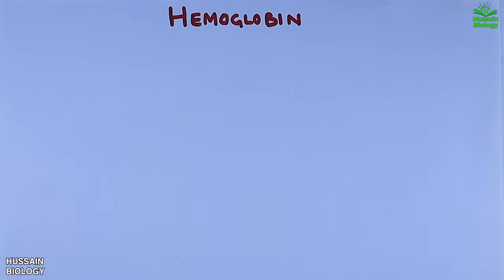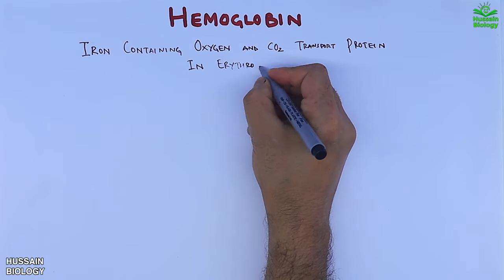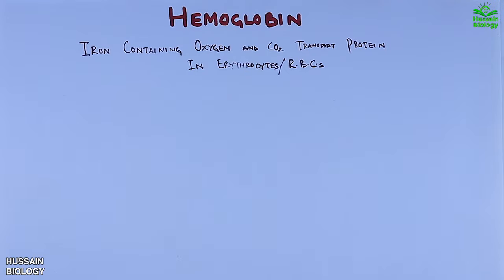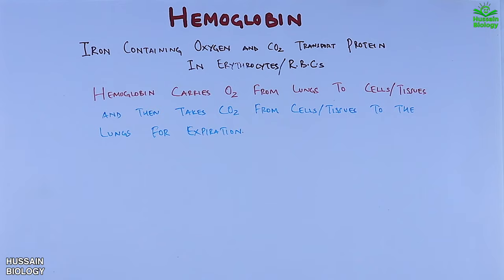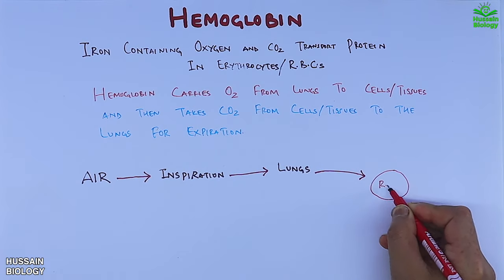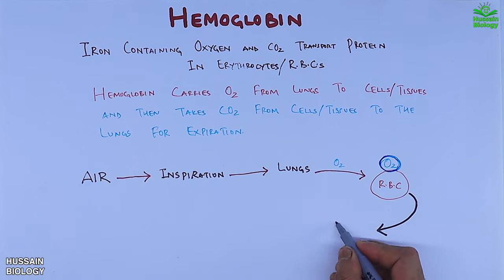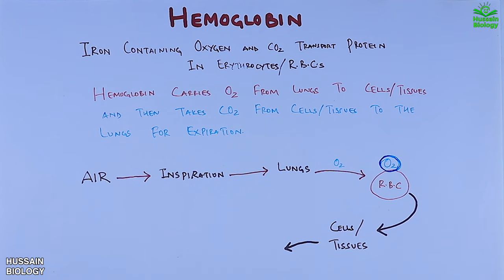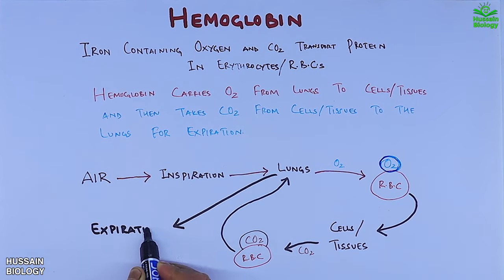We know hemoglobin is an iron-containing oxygen and carbon dioxide transport protein in erythrocytes or RBCs. It carries oxygen from the lungs to cells and tissues, and then takes carbon dioxide from cells and tissues back to the lungs for expiration. Looking at the flowchart: air is inspired into the lungs, RBCs carry oxygen from the lungs and bind it with hemoglobin, delivering it to cells and tissues. Those cells and tissues release carbon dioxide as a byproduct, which RBCs then deliver back to the lungs where it is expired out.